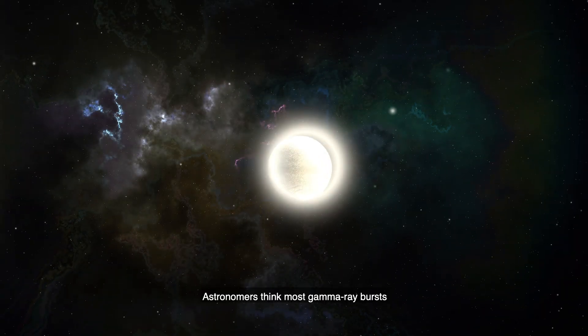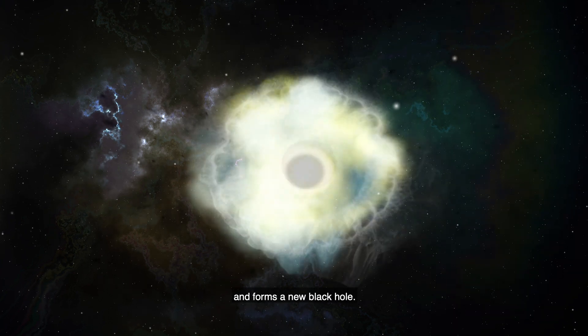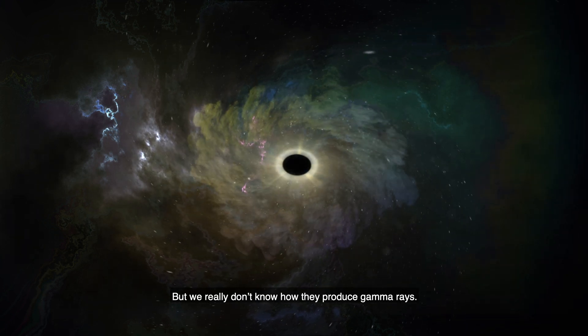Astronomers think most gamma-ray bursts occur when a massive star collapses and forms a new black hole. But we really don't know how they produce gamma rays.